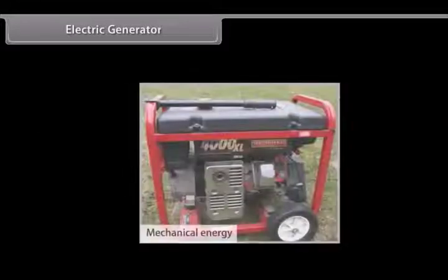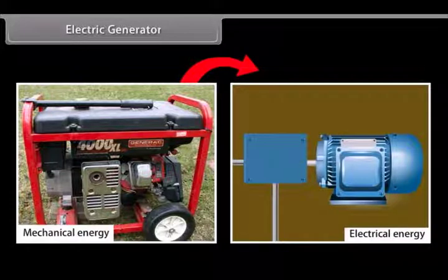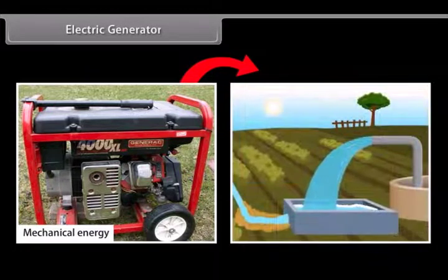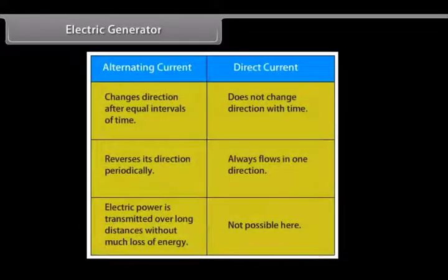Electric Generator. An electric generator converts mechanical energy to electrical energy. It forces electrical charge to flow through an external electrical circuit. Examples include a water pump which causes water to flow but does not create water. Electric generators operate based on electromagnetic induction, that is, whenever a conductor moves to a magnetic field, a current is induced in this conductor. If a magnet is spinning inside a coil, alternating current is induced in the coil. Alternating current changes direction after equal intervals of time. The other type of current is direct current which does not change direction with time.